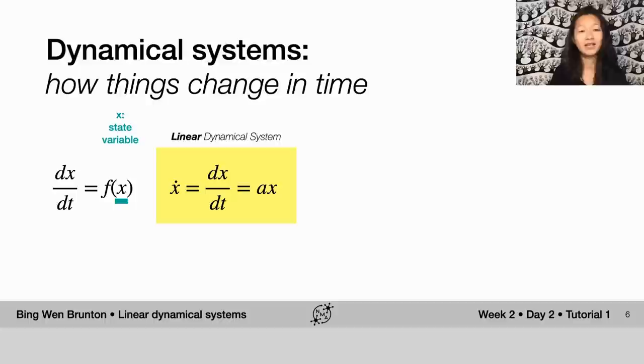For this dynamical system to be linear, x dot equals ax, where a is some number and x is a state. It's only dynamical systems that could be expressed by the form of x dot equals ax.